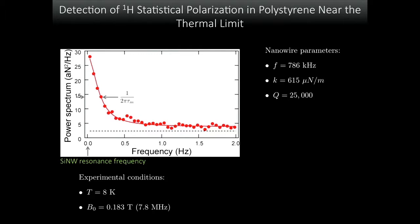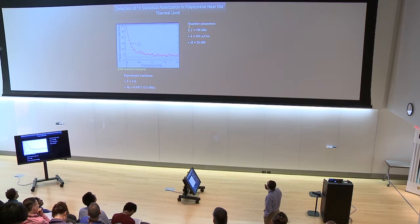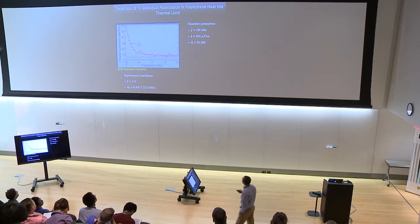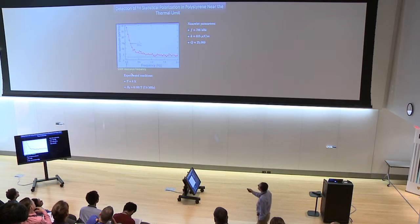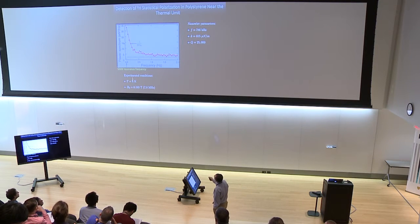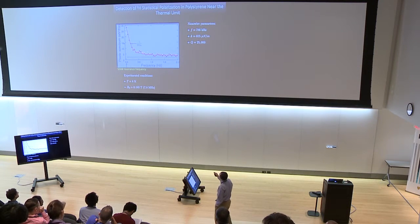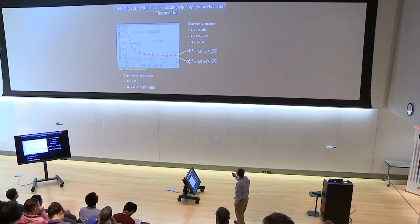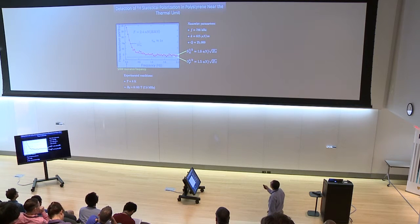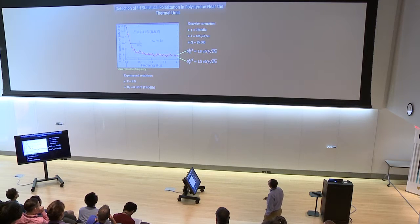Nonetheless, we can do very sensitive spin detection. This is the spin signal from a collection of protons in polystyrene. Here are the properties of the mechanical oscillator we use for readout. This was done at a very low field, 0.18 Tesla, 7.8 megahertz. Zero frequency here refers to the resonance frequency of the cantilever, so we've demodulated that already. This is the extra excitation we pick up from this MAGIC protocol. The line width corresponds to the correlation time of these statistical fluctuations, which is of order a second. This plot demonstrates we can see very small forces, about two attonewtons rms in this case, near the thermal limit of the oscillator.